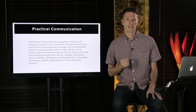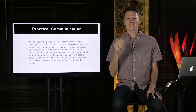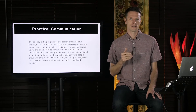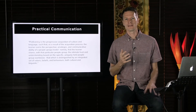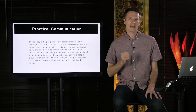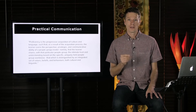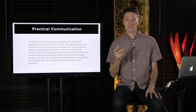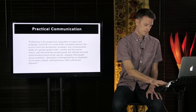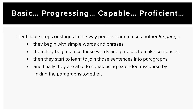Learning is a gradual process that looks different for every person and situation, and some aspects can't be neatly divided into sections and measured in a scientific way. Even so, there are similarities identified in the way all people grow in their ability to communicate cross-culturally. There are clearly identifiable steps in the way people learn to use language: they begin with simple words and phrases, then use those to make sentences, then join sentences into paragraphs, and finally speak using extended discourse by linking paragraphs together.